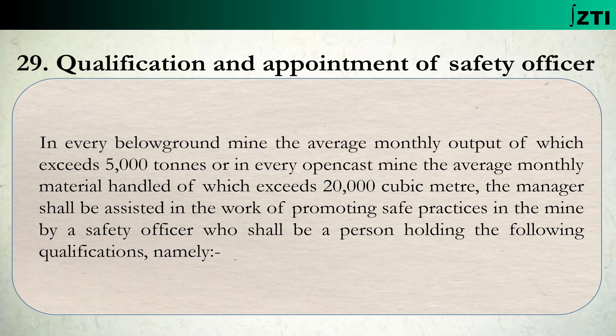Next regulation is Regulation No. 29: Qualification and Appointment of Safety Officer. In every below ground mine the average monthly output of which exceeds 5,000 tons, or in every open cast mine the average monthly material handled of which exceeds 20,000 cubic meters, the manager shall be assisted in the work of promoting safe practices in the mine by a safety officer who shall be a person holding the following qualifications.